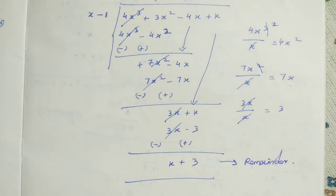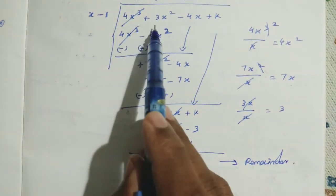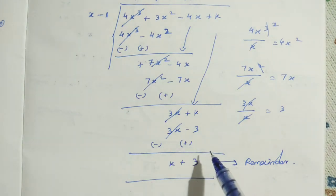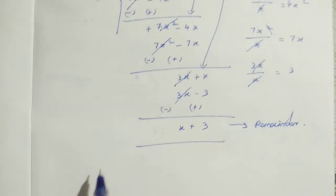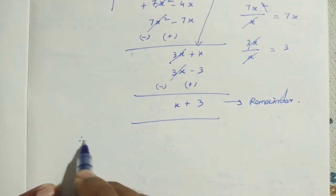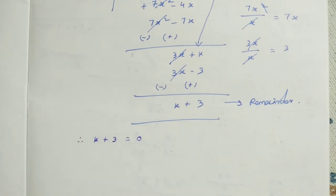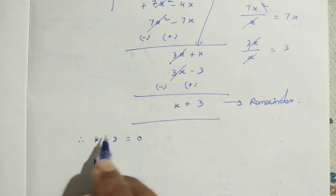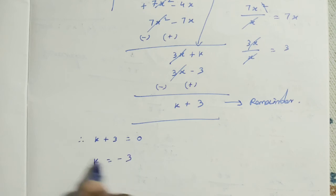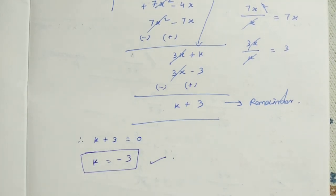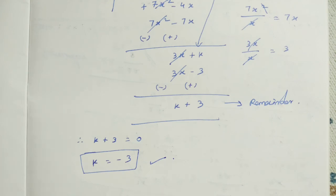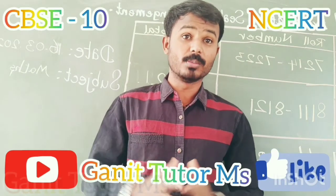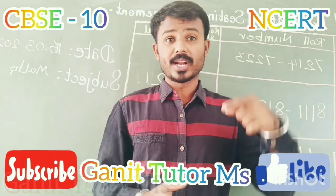In this problem, they said x minus 1 is a factor of the polynomial, so we are supposed to get remainder 0. But we get k plus 3. That means k plus 3 equals 0. Since it is a factor, the remainder must be 0, so k plus 3 equals 0. Transposing, k equals minus 3. I hope in this video you are clear about the problem. Thank you for watching. If you have any doubt, you can ask me in a comment. Thank you.